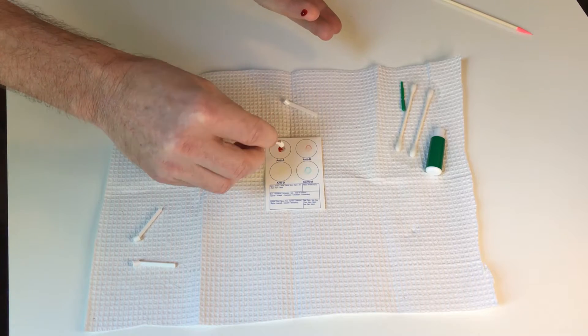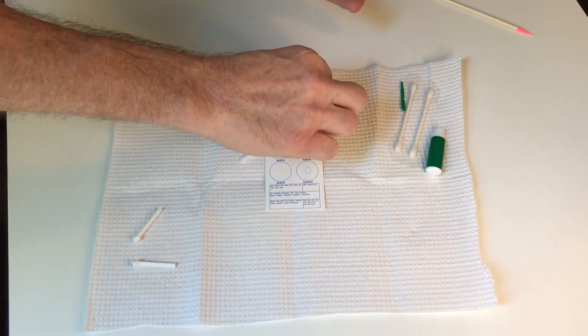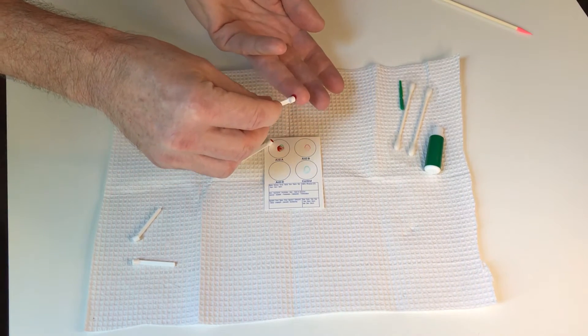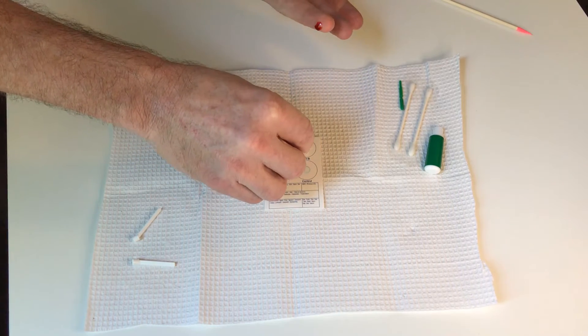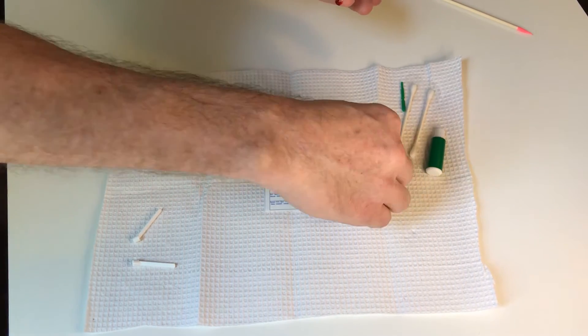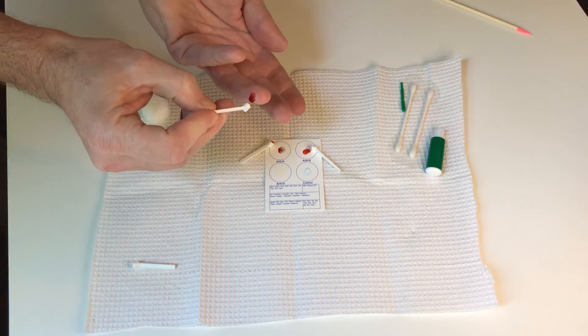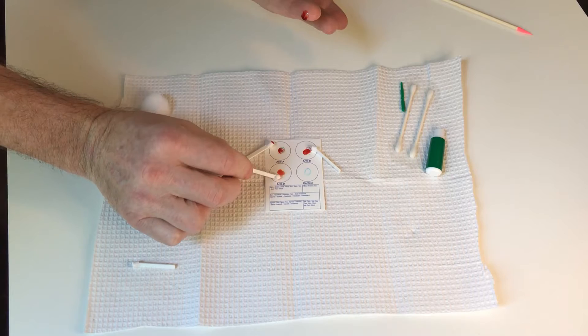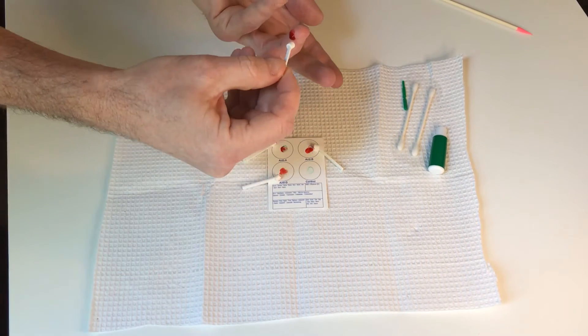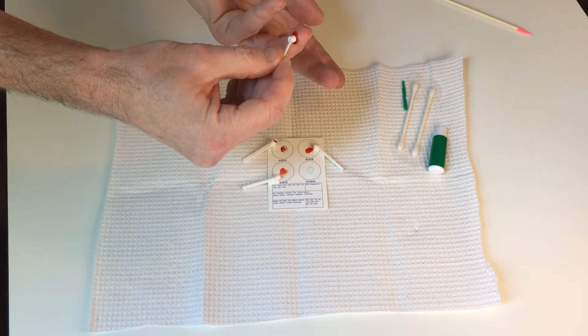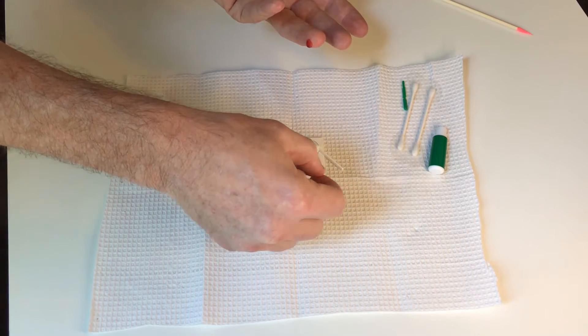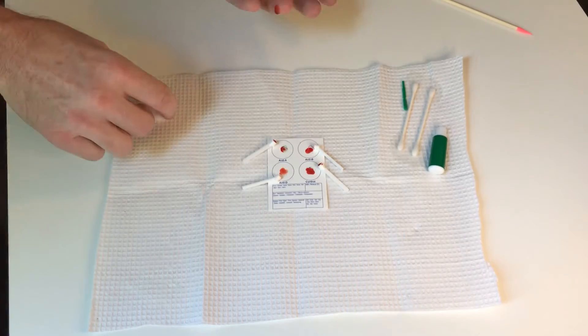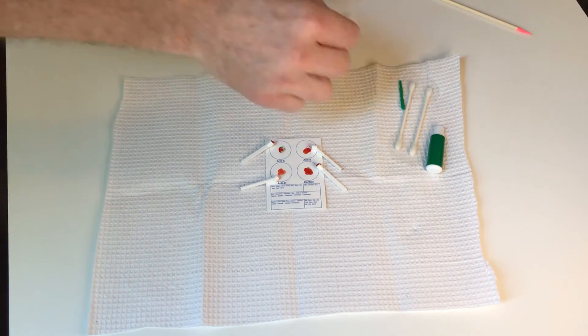I'm going to get one of these little sticks, get some blood on it, put it on there and leave it for a second. Get another stick, put it on there, leave it for a second. Get another stick, put it on there, leave it for a second. And then the control, get it on there and leave it.